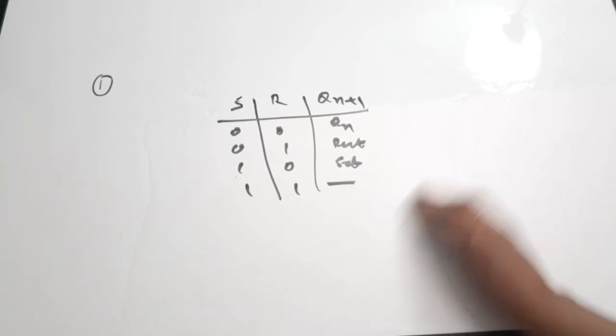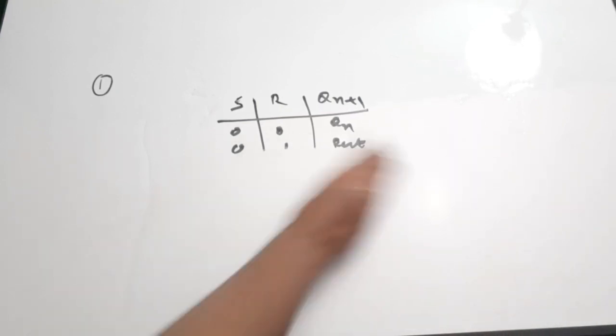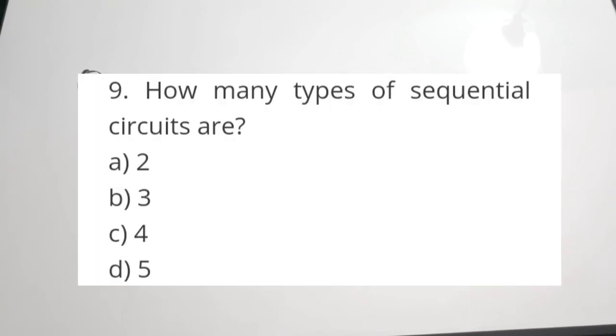Question number 2 is again from Digital Electronics. This part 3 video is a little bit more difficult compared to parts 1 and 2. As we move on, the questions will get more difficult. So moving on to the second question: how many types of sequential circuits are there?